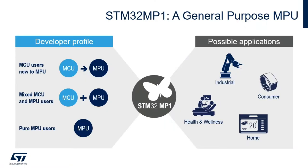For those of you not already familiar with the STM32 MP1, it is a general-purpose microprocessor with the added benefit of an embedded microcontroller core. This allows the STM32 MP1 to be applicable to all profiles of developer, whether you are a current microcontroller user new to microprocessors, a pure microprocessor user, or a developer already familiar with a mixed MCU MPU architecture. Being a general-purpose microprocessor, the STM32 MP1 applies to various use cases and applications from industrial to medical and consumer and wearables to home appliances.